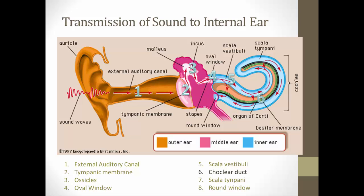The wave actions of the perilymph are transmitted from the scala vestibuli to the scala tympani, which then causes the round window to vibrate. The purpose of the round window is basically to counteract the movement of the oval window, so that pressures inside the perilymph remain constant. As the stapes pushes the oval window in, the round window moves out; as the stapes pulls the oval window out, the round window moves in — this way there's no pressure buildup that could interfere with hearing.